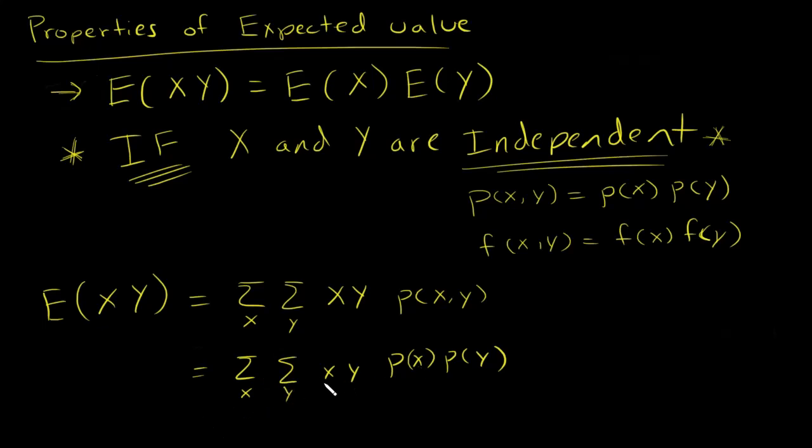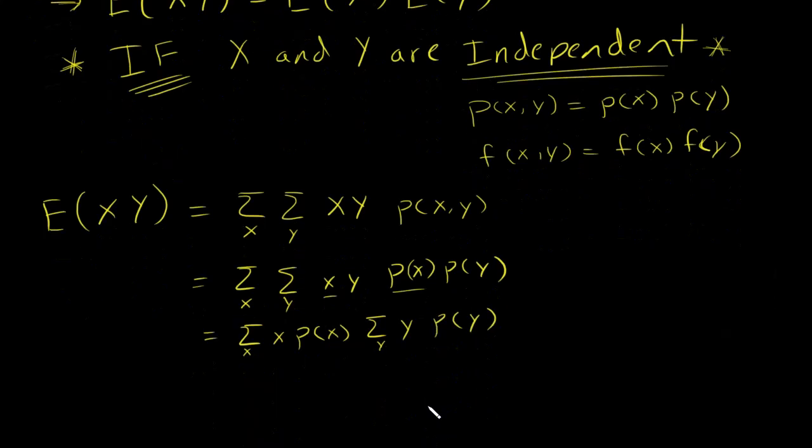Then I can basically use my properties of sum and I can pull out the X and I'll pull out basically anything that doesn't have to do with Y and I'll have that basically pull them out of the sum for Y. And then I'll be left with Y times the probability mass function of Y. And then so once you're there, you say, oh, okay, so this is the expected value of X and this is the expected value of Y.